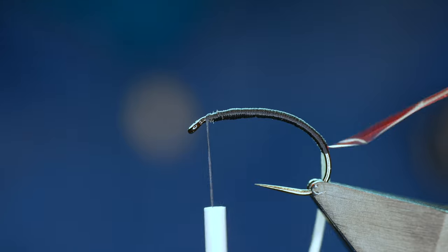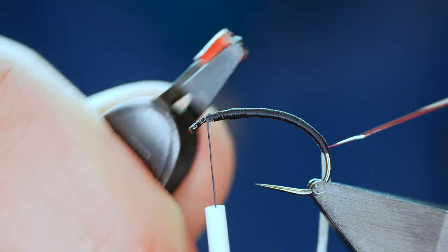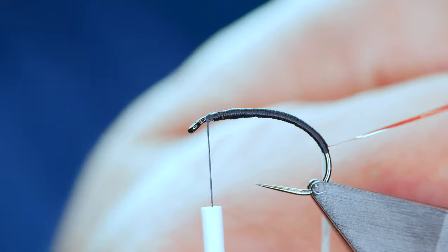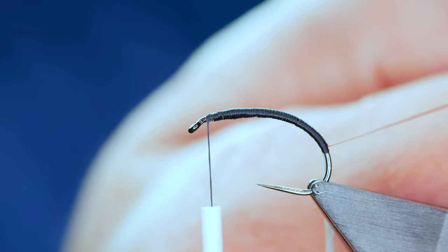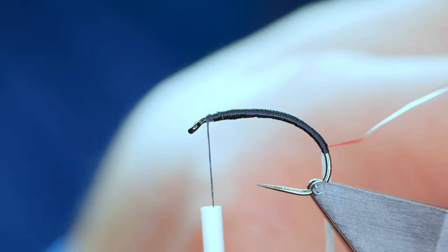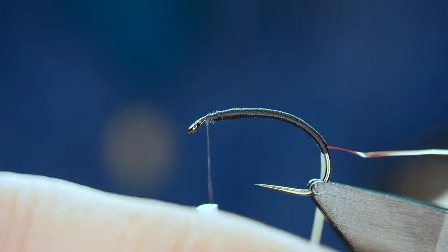What I want to do is try and keep this red rib out of the way and what I'm going to do is just attach my hackle pliers and just lay it on my vise just to keep it out of the way.